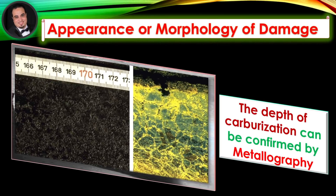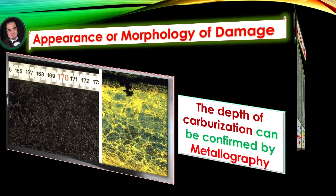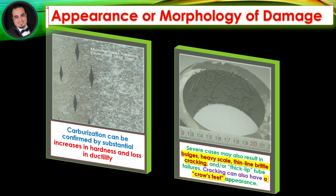Appearance or morphology of damage: The depth of carburization can be confirmed by metallography. Carburization can also be confirmed by substantial increases in hardness and loss in ductility. Severe cases may result in bulges, heavy scale, thin line brittle cracking, and/or thick lip tube failures. Cracking can also have a crow's feet appearance.